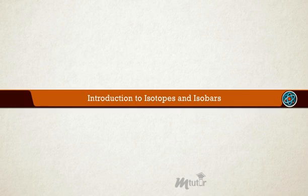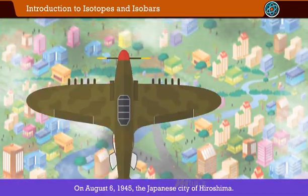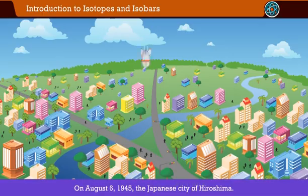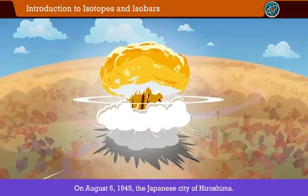Introduction to Isotopes and Isobars. On August 6, 1945, a 10-foot-long bomb fell from the sky over the Japanese city of Hiroshima.